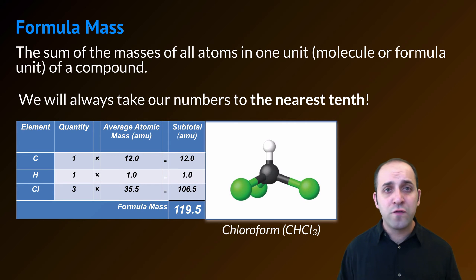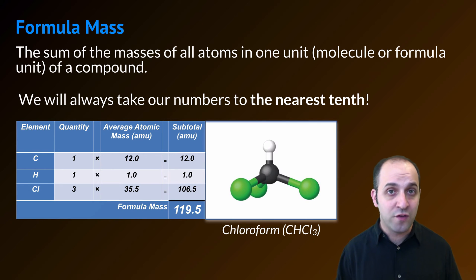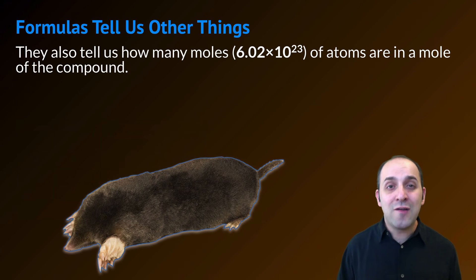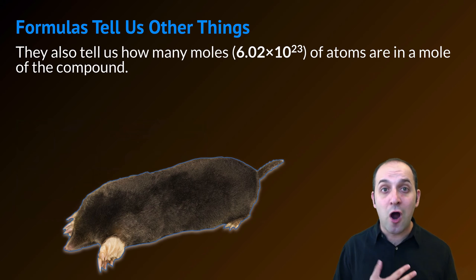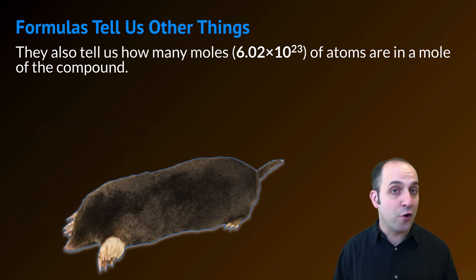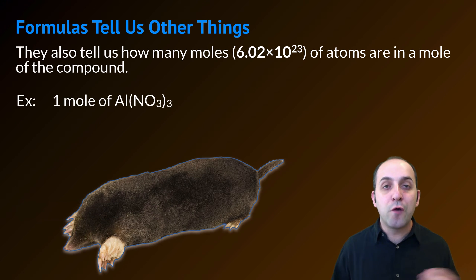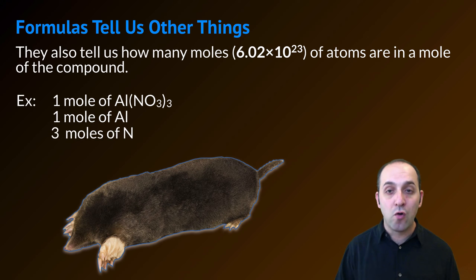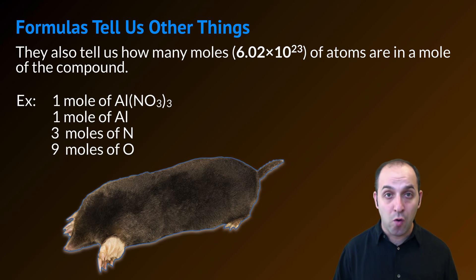Similarly, now that you know the rules for naming and formulating compounds, you should be able to figure out a formula from a name and then determine its formula mass. Formulas also tell us how many moles of atoms are in a mole of the compound. One mole is defined as 6.02 × 10²³ particles of a substance. So for our example of aluminum nitrate, if we had one mole of aluminum nitrate, there would be one mole of aluminum atoms, three moles of nitrogen atoms, and nine moles of oxygen atoms.